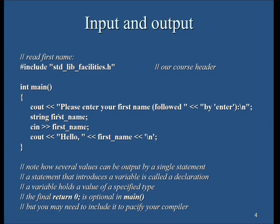Input and output is not only with the user — there can be a file you want to write to or read from, or some resource attached to your network. In this particular example, several values are being output by a single statement. This is a single statement called cout, which outputs or prints a string literal to the screen.